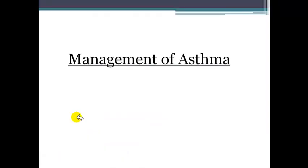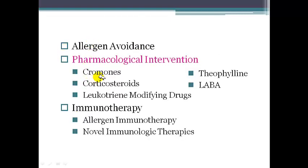These severity classes are important when managing asthma. There are two types of management: pharmacological and non-pharmacological. Non-pharmacological management includes screening for infections and obesity, as these exacerbate asthma. Patients should avoid allergen exposure; if a parent smokes, advise them to stop. Educate the patient and family — for example, advising removal of carpets at home. Pharmacological interventions include various drug classes and immunotherapy.